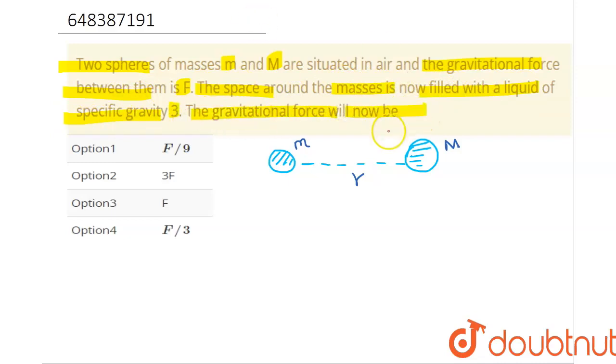So we have been given two bodies of mass small m and capital M, they separated by, let's suppose, a distance of r. Now, if we use Newton's law of gravitation that says